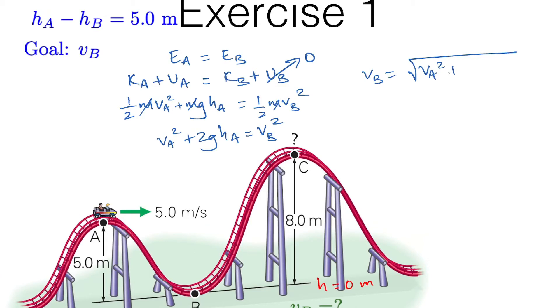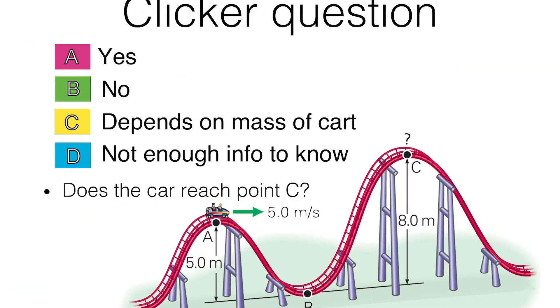So vB equals square root of vA squared plus 2g height A. If you plug in the values, vA is given which is 5 meters per second, height A is 5 meters, so you get velocity at B approximately 11.1 meters per second.